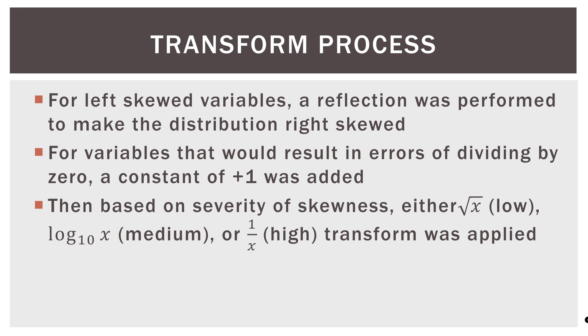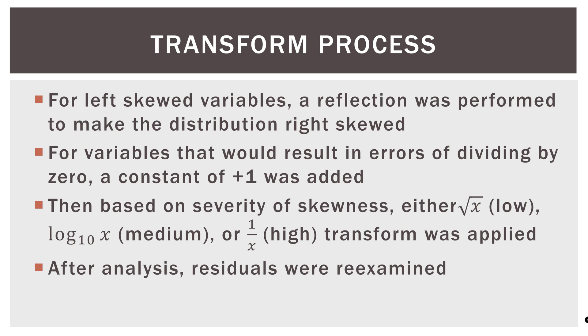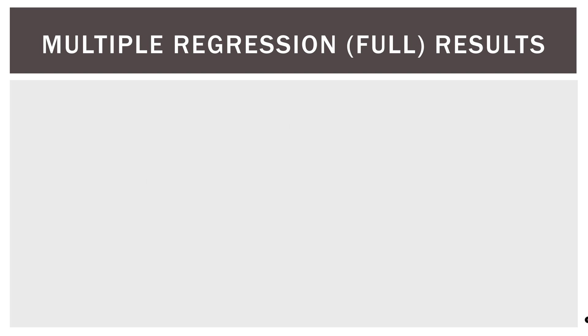Then based on the severity of the skewness, either a square root was taken for the transformation — for a low skewness situation — log base 10 for a medium skewness, or one over x for a high skewness. So based on the severity of skewness, a different transform was implemented for that variable. And then after the analysis, I went back and checked all the residuals to make sure I hadn't made any mistakes in the other direction, which can happen when we're doing transformations.